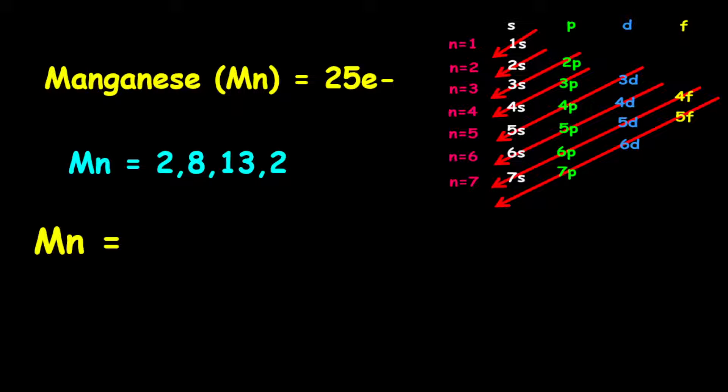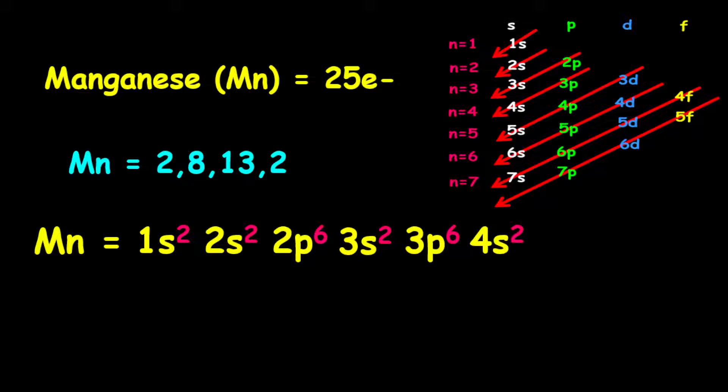For the orbital filling electron configuration, it is given as 1s2, followed by 2s2. Then we have 2p6, followed by 3s2. Then we have 3p6, followed by 4s2, and then finally we have 3d5.